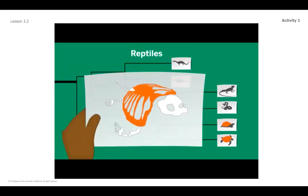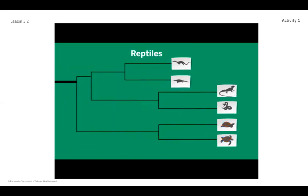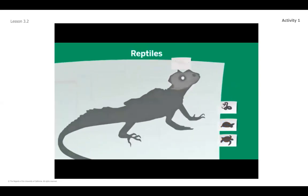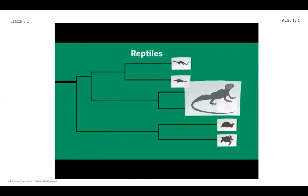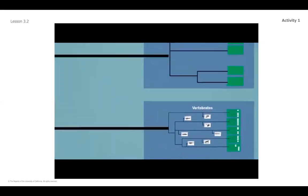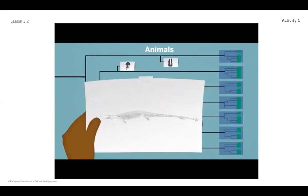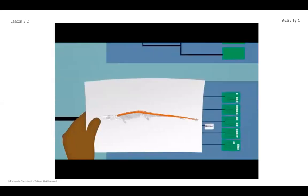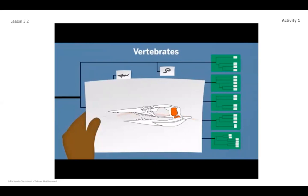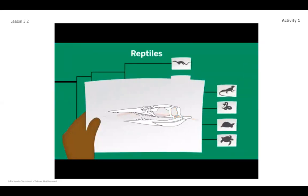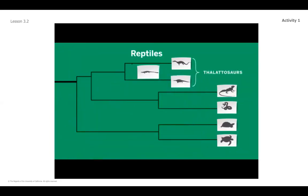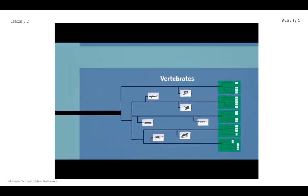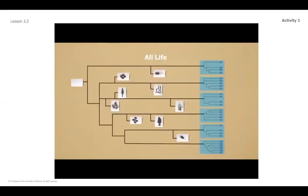Body structures have been passed down since the first living thing, so no matter where any two species are on the evolutionary tree, they will always share common structures. For example, salmon and giraffes both have backbones because they inherited this structure from a shared ancestor. Species that branch off from a more recent common ancestor can share structures that no other species have — these are called diagnostic structures. When paleontologists find a diagnostic structure on a fossil, they can make inferences about what other group of species it shares ancestry with, helping figure out where the fossil belongs on the evolutionary tree.